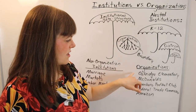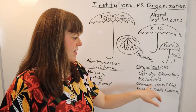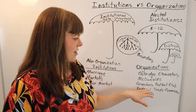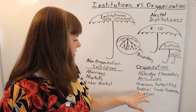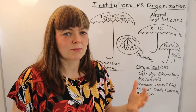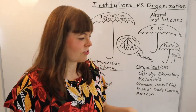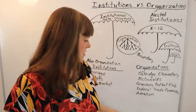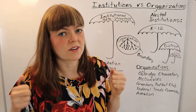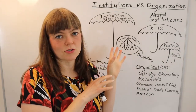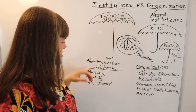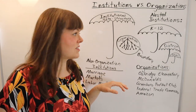Organizations include things like a specific school, a specific company like McDonald's, a specific club or church like Greenboro Football Club, or the Federal Trade Commission — a regulatory body with its own internal structure and its own purpose. Amazon is certainly both an organization and an institution. Every organization is an institution, but not every institution is an organization.